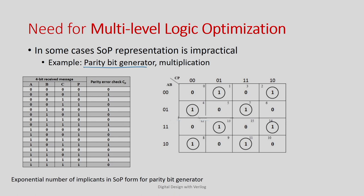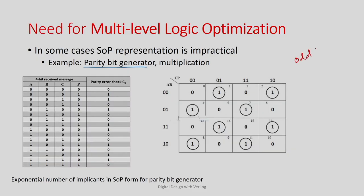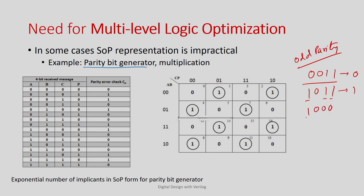A parity bit generator checks whether the number of 1s in the input is even or odd. For odd parity with a 4-bit input: if the number of 1s is 2 (even), output is 0; if it's 3 (odd), output is 1; if it's 1 (odd), output is 1, and so on. So the circuit takes 4-bit inputs A, B, C, D and produces a parity output of 0 or 1 based on the number of 1s.